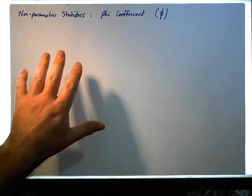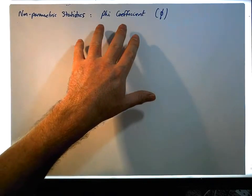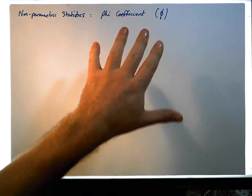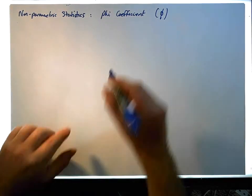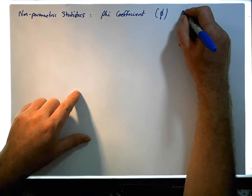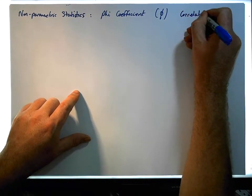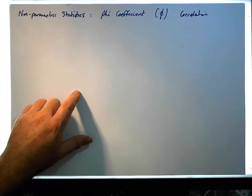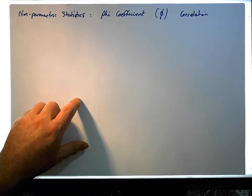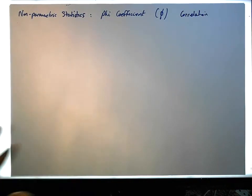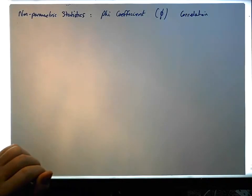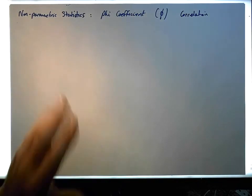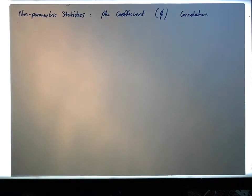Up to this particular stage, we've considered a number of different correlation coefficients. We've seen a number of different types, from the biserial to the point biserial, the Spearman rank order correlation coefficient, and so on.